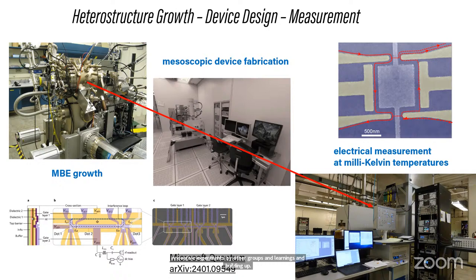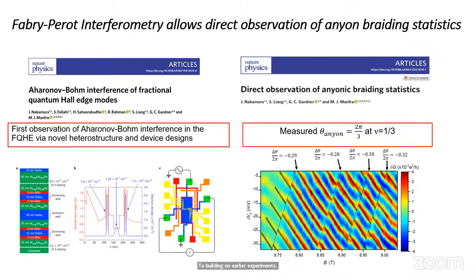From my view, getting all these things to work together was our contribution. So what I'm going to try to convince you of in the time remaining is that Fabry-Perot interferometry, the electronic analog of an optical Fabry-Perot interferometer, allows us to directly observe anionic braiding statistics. And this was built up in a series of experiments starting back in 2019, when we first figured out how to design a proper heterostructure that allows us to get beyond obfuscating mesoscopic physics effects and get at the core of measuring the fractional statistics.